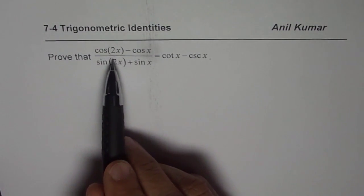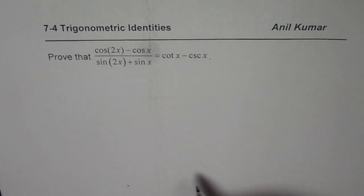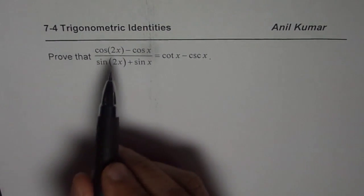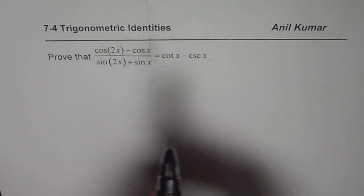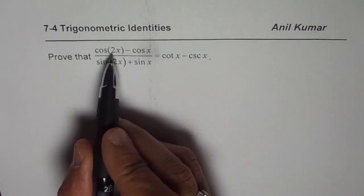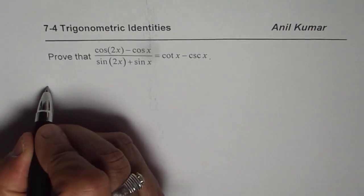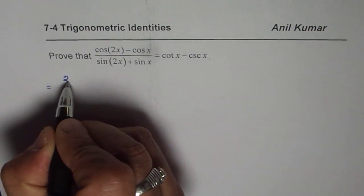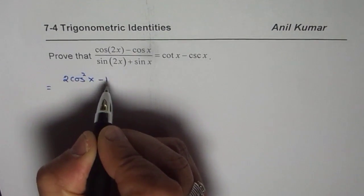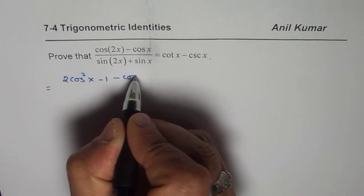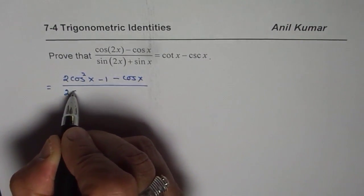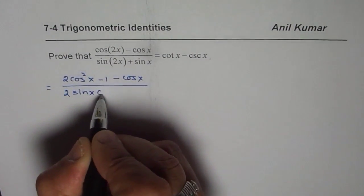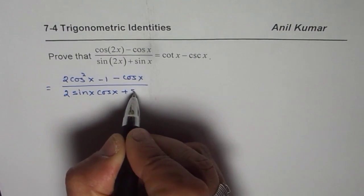Now you remember the formula cos(2x) is actually written in three different ways. Since the numerator has cos x, we will maintain the way which involves 2 cos squared x. So we could write cos(2x) as 2 cos squared x minus 1, and then we have minus cos x here, divided by sin(2x), which is 2 sin x cos x plus sin x.